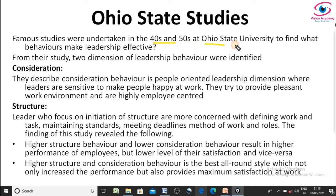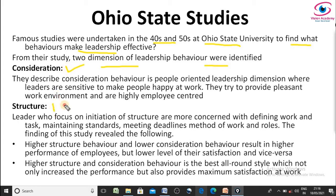Let us understand one by one. First, Ohio State Studies — famous studies were undertaken in the 1940s and 1950s at Ohio State University to find out what behaviors make leadership more effective. From their study, they found two dimensions of leadership behavior: Consideration and Structure.